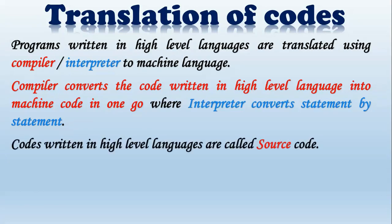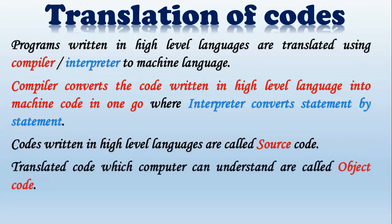Code written in high level languages is called source code — that is, whatever a programmer writes is called source code. The translated code which the computer can understand is called object code.